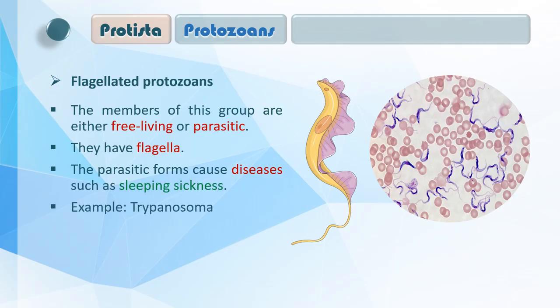Protozoa की second category है Flagellated Protozoas — मतलब जिनके पास flagella है। The members of this group are either free living or parasitic। इस group में जो भी members हैं वो या तो freely रहते हैं अपने habitat में, या तो कोई host को ढूंढते हैं, उनकी body में जाते हैं, nourishment और nutrition लेते हैं और उनको disease करते हैं। Parasitic forms cause diseases such as sleeping sickness, और ये disease करने वाले organism का नाम है Trypanosoma, जैसा figure में दिखाया गया है।